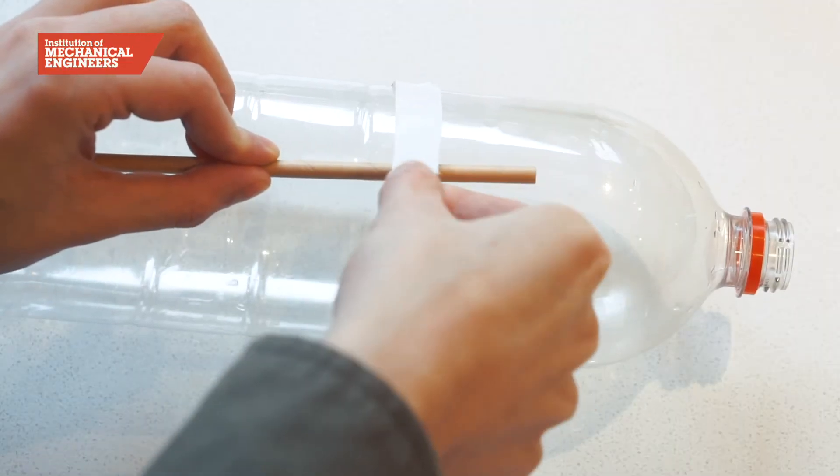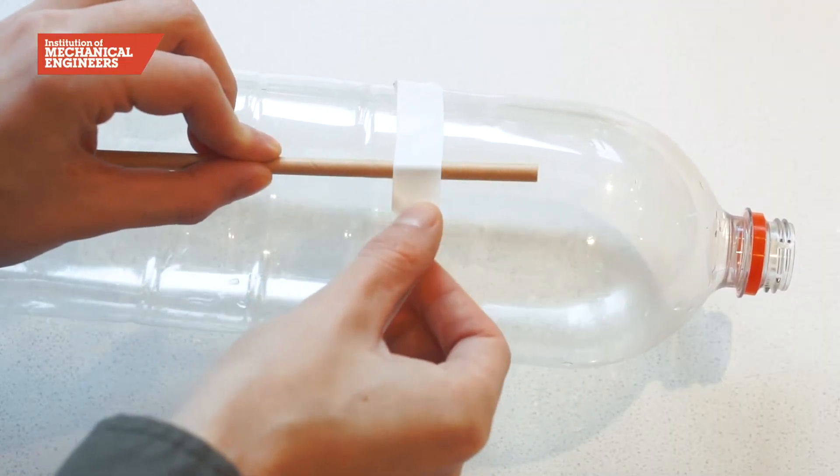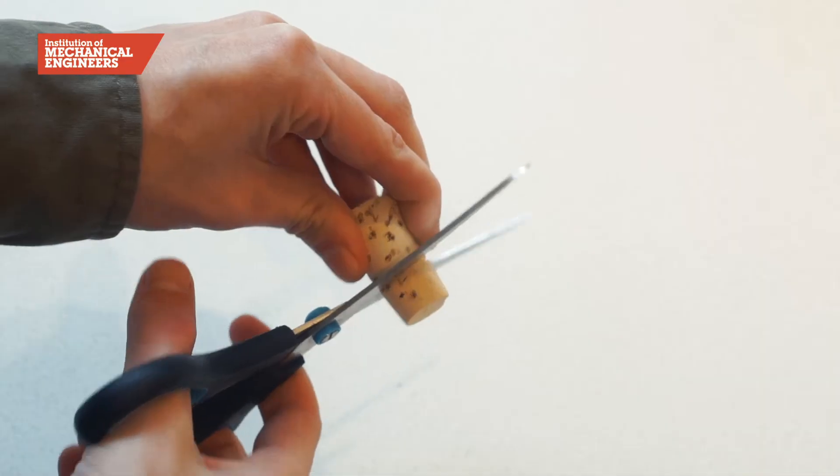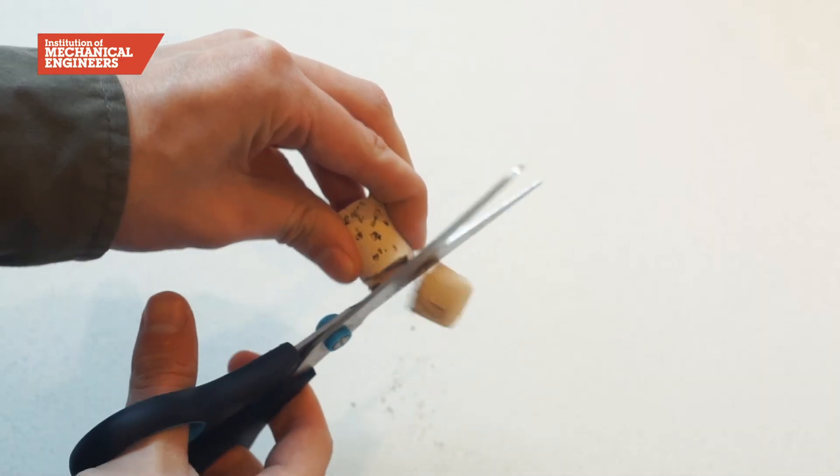Next we will trim the cork so it is shorter than the length of the ball pump needle. Then carefully pierce a hole in the cork and push the pump needle into the hole and right through to the other side.